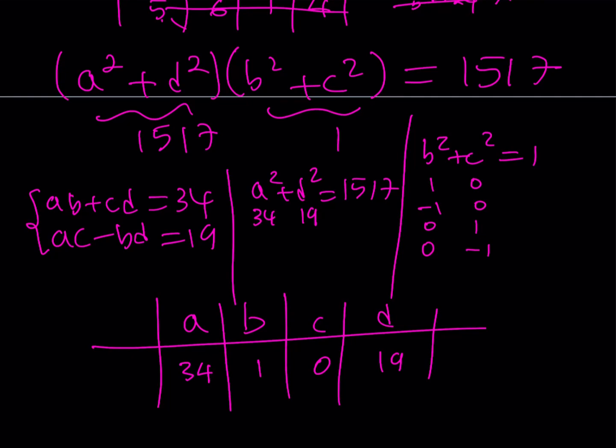AB equals 34, CD equals 0. So the first equation is satisfied. In the second equation, AC becomes 0 and BD becomes 19. Unfortunately, 0 minus 19 doesn't give us 19, so the second equation is not satisfied with this arrangement.